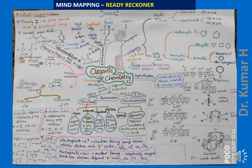Under structural isomerism, chain isomerism involves a change in the carbon chain — the carbon skeleton varies. Metamers differ in the position of a polyvalent atom. For example, CH₃CH₂OCH₂CH₃ and CH₃CH₂CH₂OCH₃ are metamers — the oxygen atom is at a different position in the chain.